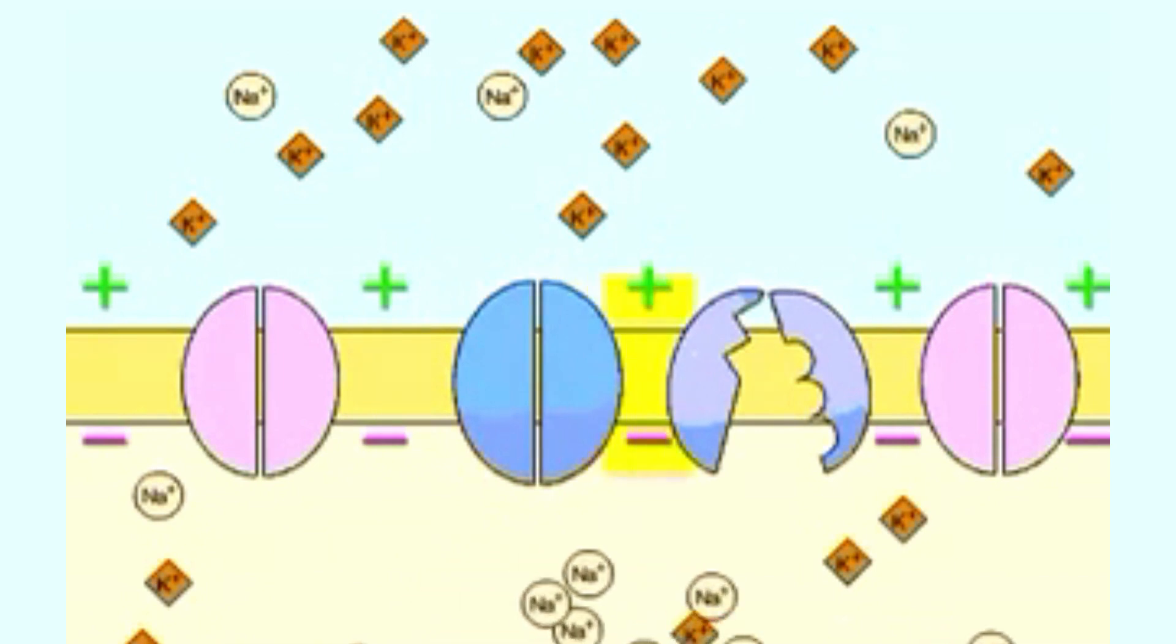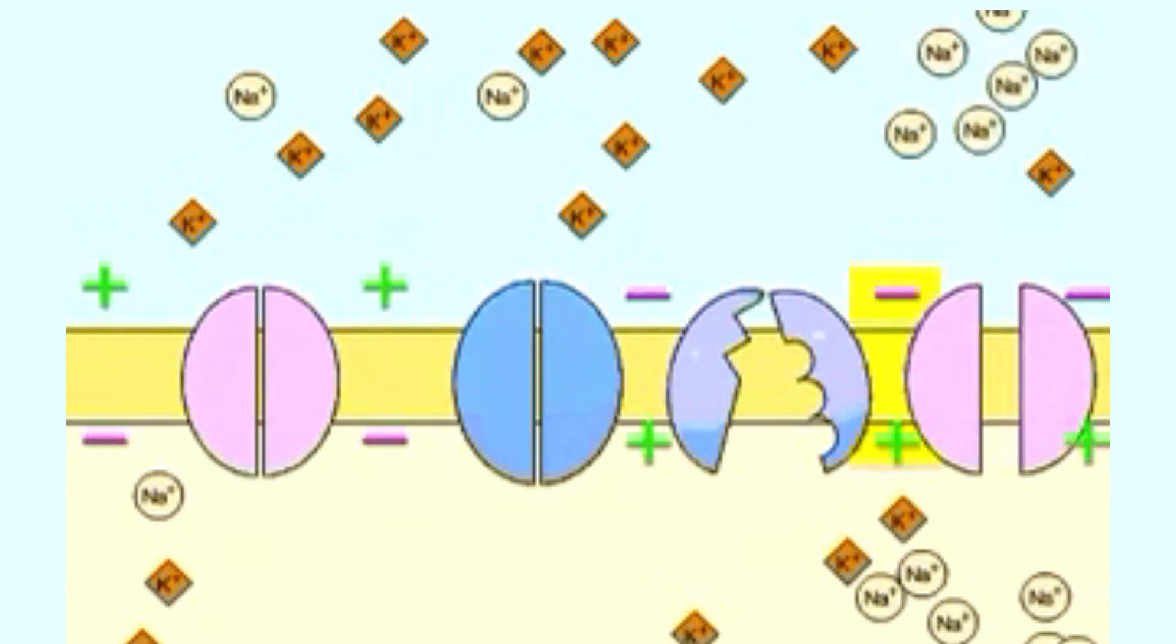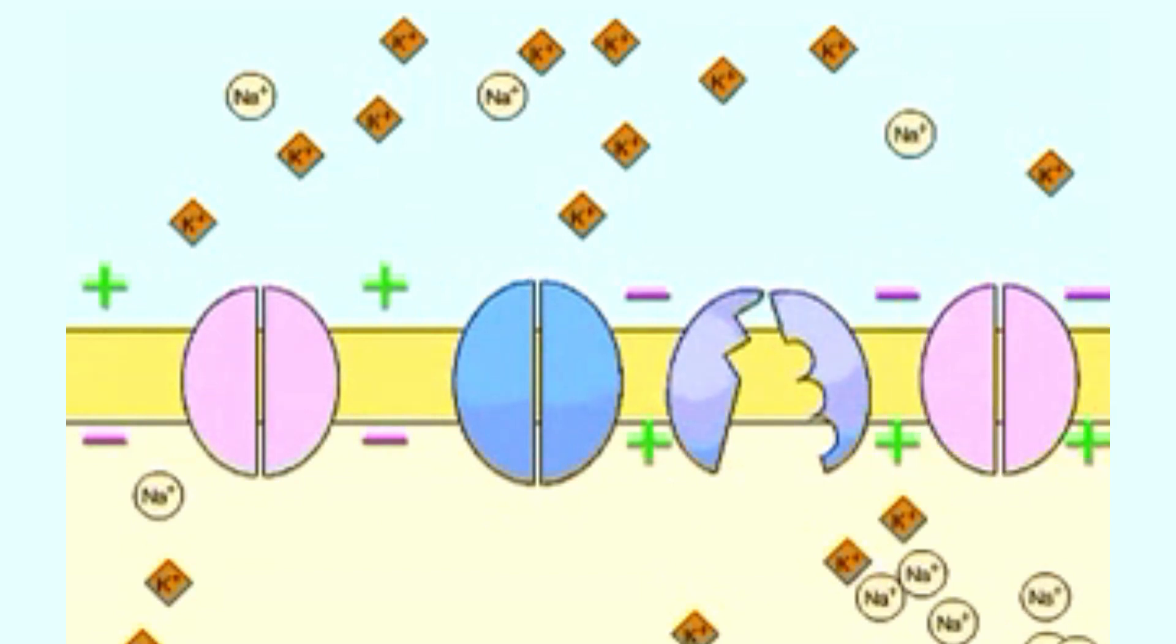Meanwhile, the sodium ions inside the cell have diffused to adjacent areas, causing a slight change in the polarity of the membrane ahead of the action potential. This change in polarity causes the voltage gated sodium channels along this part of the membrane to open. Again, sodium ions rush in and the action potential spreads to the adjacent part of the neuron.